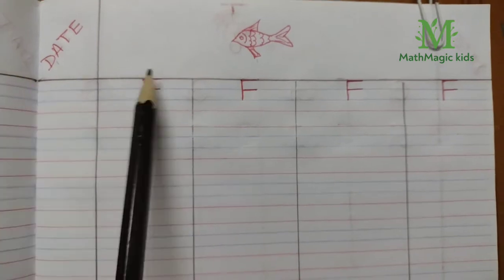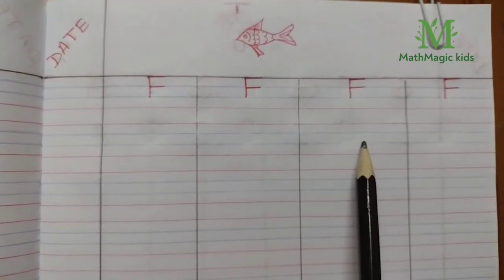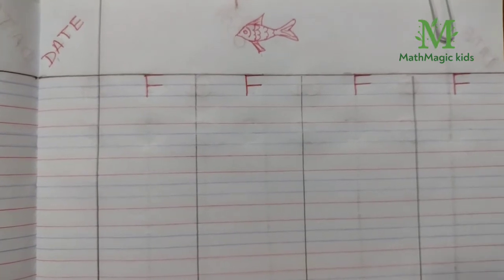Before you start writing, draw the margins like this. Put the date here and divide the page into four columns.